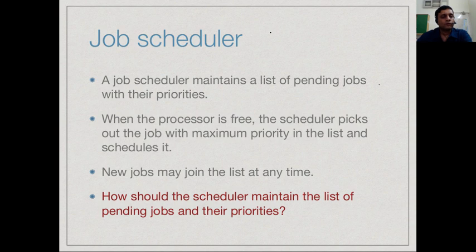Suppose we have a job scheduler running on an operating system. When we run multiple tasks on an operating system, each of them runs for a little bit of time and then is swapped out. A job scheduler maintains a list of all jobs which are pending along with their priorities. Whenever the processor is free, the scheduler picks out a job with the maximum priority in the list and schedules it.